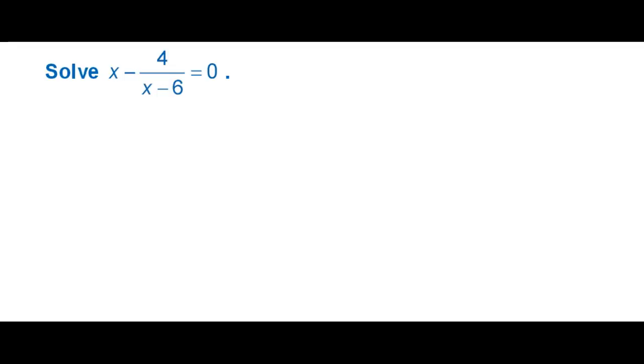So for this one we're trying to solve x minus 4 over x minus 6 equals 0. First thing we're going to want to do is multiply both sides by the denominator so we don't have to deal with a fraction.